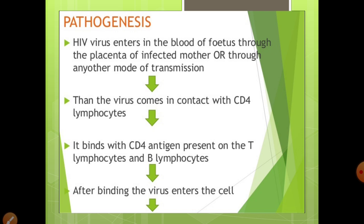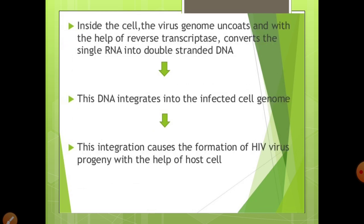Coming to its pathogenesis, HIV enters into the blood through any mode of transmission. This virus comes in contact mainly with the CD4 lymphocytes, which are basically present on T cells, dendritic cells, and macrophage cells. After binding with the CD4, it enters into the cell. The virus uncoats and the single-stranded RNA present inside the virus, through the enzyme reverse transcriptase, converts into double-stranded DNA.